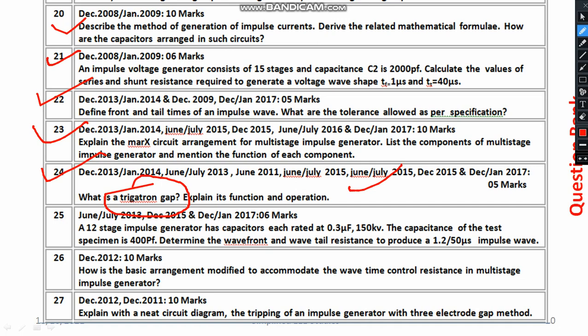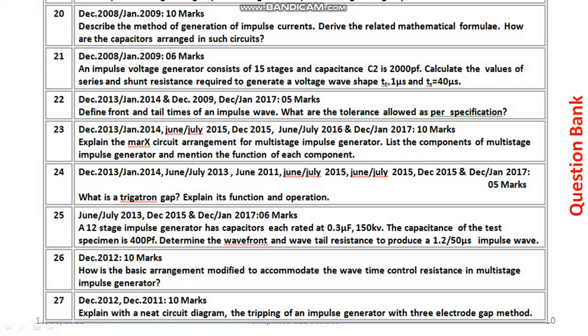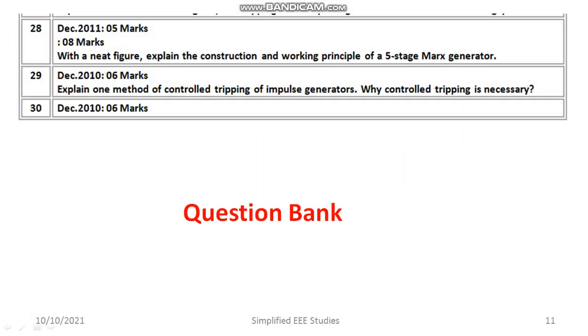The question related to the design of the impulse generator is already explained. Another important question is: what are the major control methods of the multi-stage impulse generator? Please follow up — it is very important. Also study: explain with a neat circuit diagram the tripping of the impulse generator with a three-electrode gap arrangement. You will also get different questions like the five-stage multi-stage impulse generator.